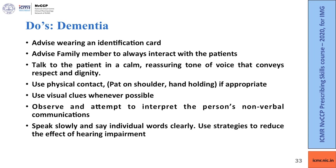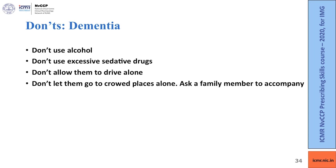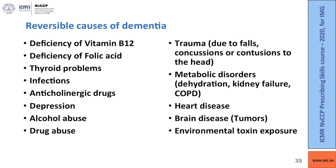Observe and attempt to interpret the person's non-verbal communications. Speak slowly and say individual words clearly. Use strategies to reduce the effect of hearing impairment, as most patients will be elderly. Patients should refrain from alcohol and not use excessive sedative drugs. Do not allow them to drive alone or go to crowded places alone as they may get lost — a family member should always accompany. Reversible causes of dementia include vitamin deficiencies, thyroid dysfunction, infections, anticholinergic drugs, substance abuse, traumas, metabolic disorders, heart diseases, and environmental factors.